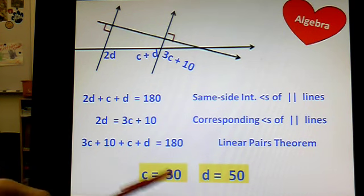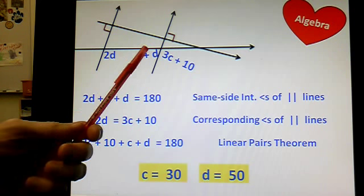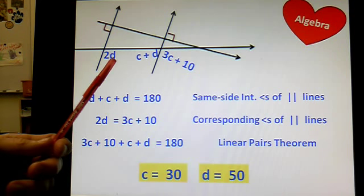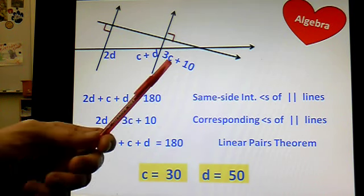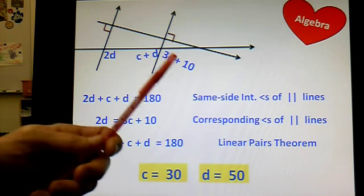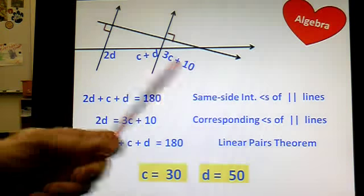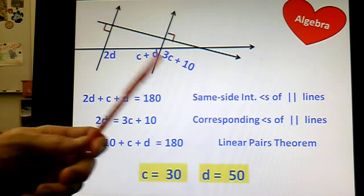And if you plug those in and check, this angle has to be 80. Plug the 50 in here, double it, you get 100. 100 plus 80 works. Plug in the 30 here, 30 times 3 is 90, 90 plus 10 is 100, so yeah, this is 100, this is 80, so they're linear pairs, that works.